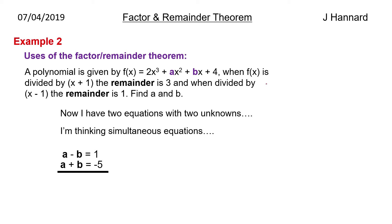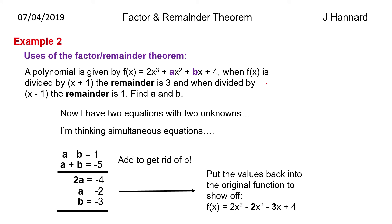So we've got a minus b equals 1, a plus b equals minus 5. I like to match the middles. Luckily the middles are already matched here. So we add them together and we get 2a equals minus 4. So a is a minus 2. Sub that back in to one of the equations and we get b equals minus 3. And just to show off, stick it into the original equation and say f of x is equal to 2x cubed minus 2x squared minus 3x plus 4.